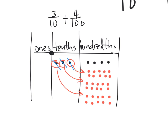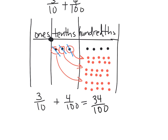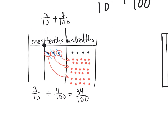What we can see is that 3 tenths plus 4 hundredths equals 34 hundredths. So there's one way to show how to add 3 tenths plus 4 hundredths.